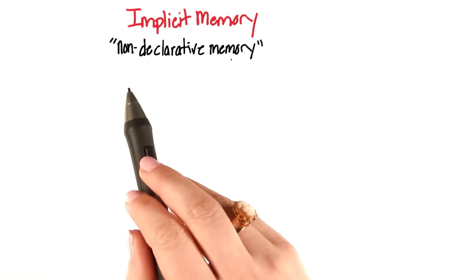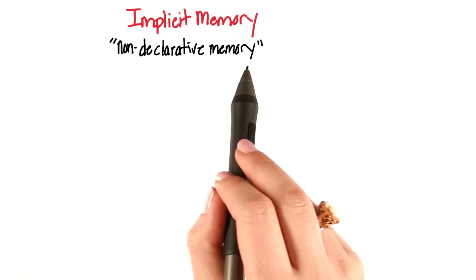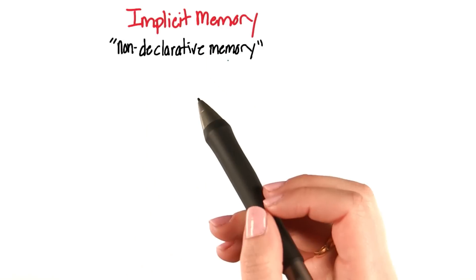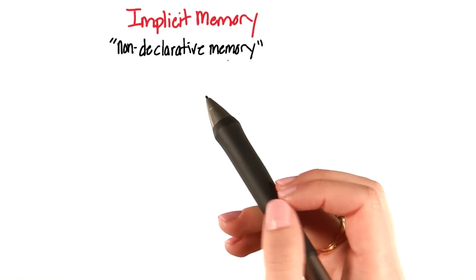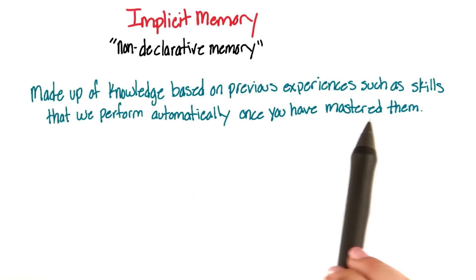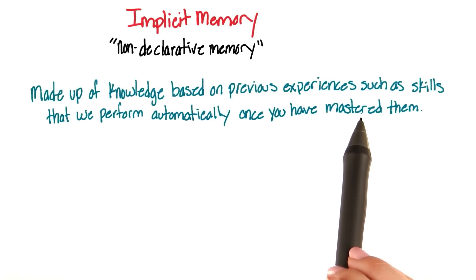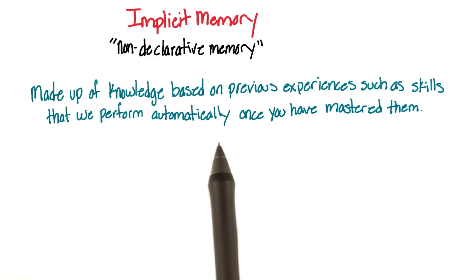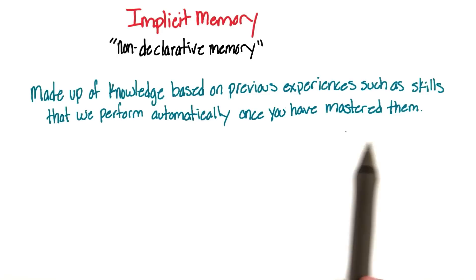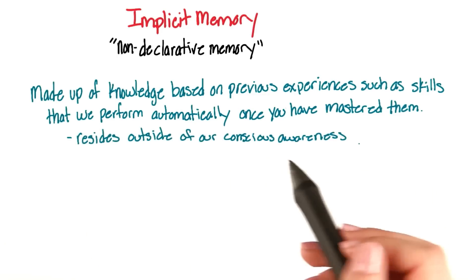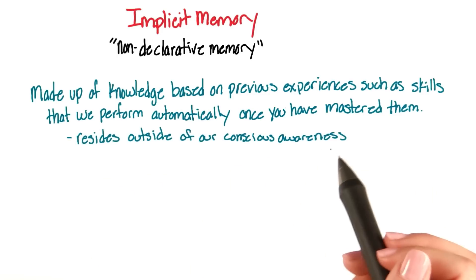Implicit memory is also called non-declarative memory, because we cannot directly recall this type of memory. Implicit memory is a kind of memory made up of knowledge based on previous experiences, such as skills that we perform automatically once we've mastered them. Implicit memory resides outside of our conscious awareness.